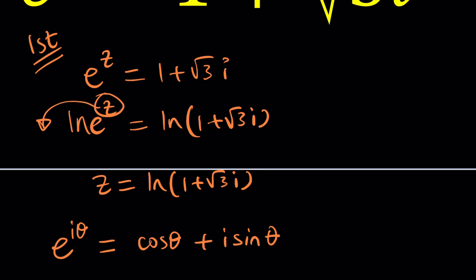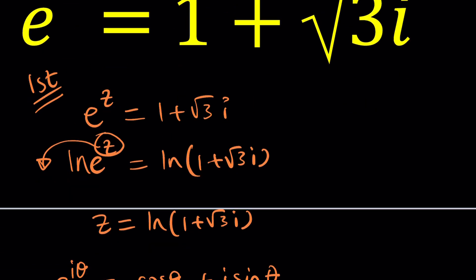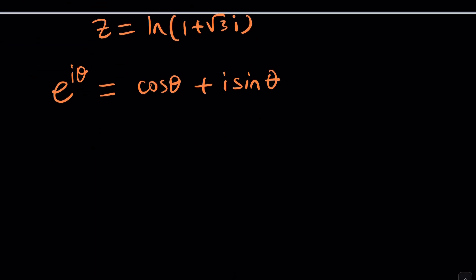If you have anything like e to the power i theta, that can be written as cosine theta plus i sine theta, and this kind of gives us the most beautiful equation in math. We replace theta with pi, so on and so forth. We're trying to solve for the unknown, so can z be i theta? If z is i theta, then e to the power z is just going to be this. But in our case, we have 1 plus square root of 3i. So can this equal 1 plus square root of 3i? Well, it depends. If theta is real, then no.